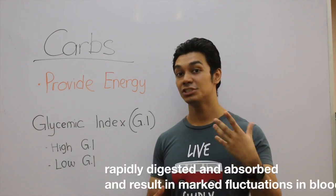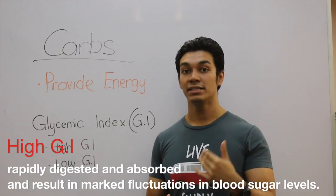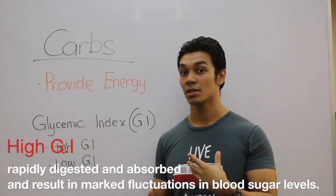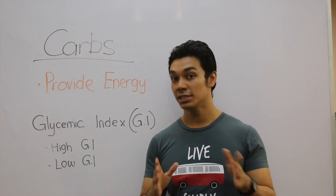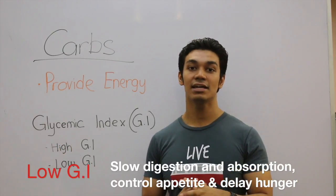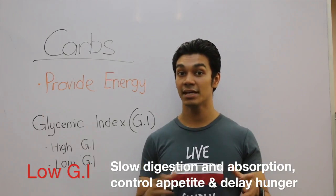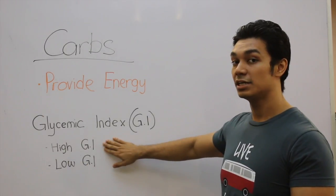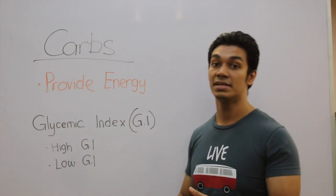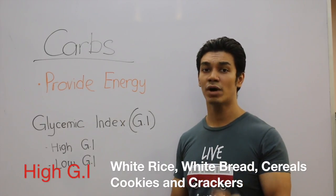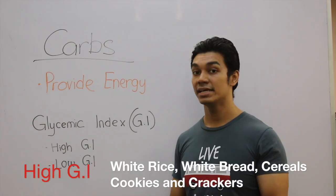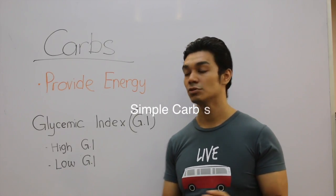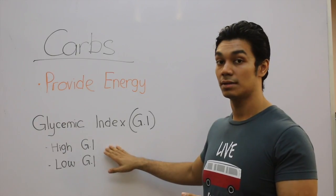High GI carb sources raise our blood sugar level rapidly when we consume them. On the other hand, low GI carb sources stabilize our blood sugar level, which is something that we want. High GI carb sources are basically white rice, white bread, corn flakes. These are all what we call simple carbohydrates. Those are all high GI carb sources.